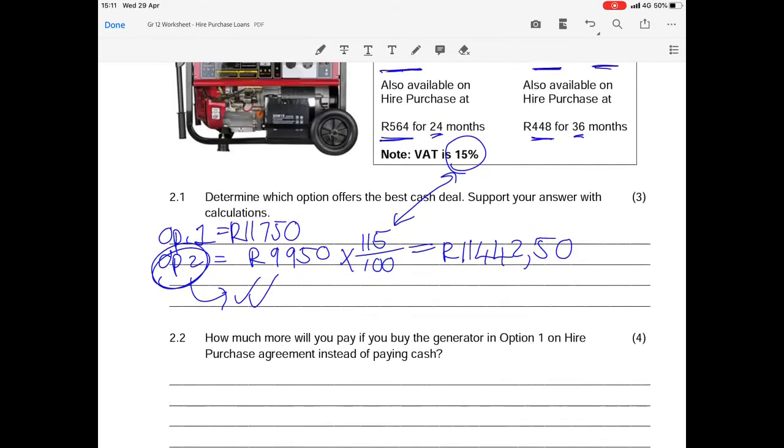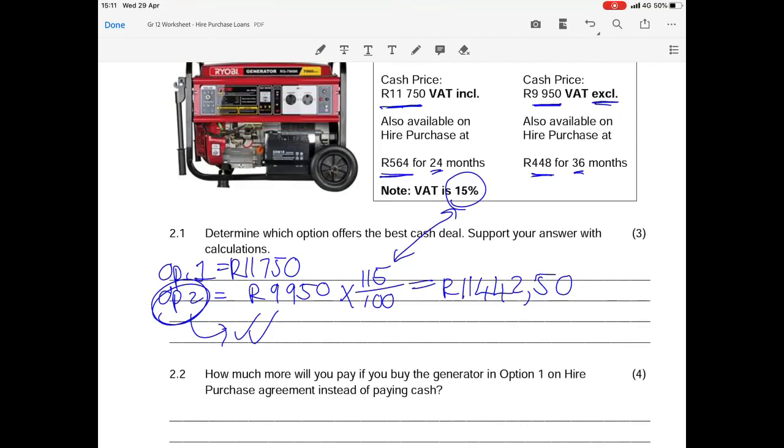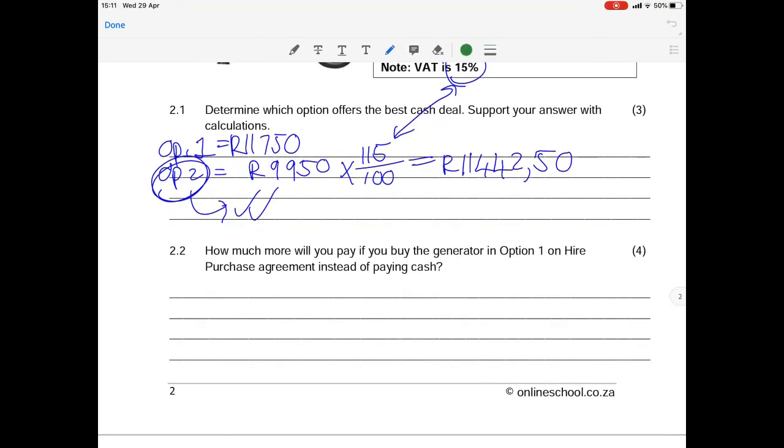Next question: How much more will you pay if you buy the generator in option 1 on hire purchase instead of paying cash? We are comparing option 1 prices of a cash price of R11,750 versus the hire purchase of R564 over 24 months. So we take that R564 and multiply it by 24 months and we will get a total price of R13,536.